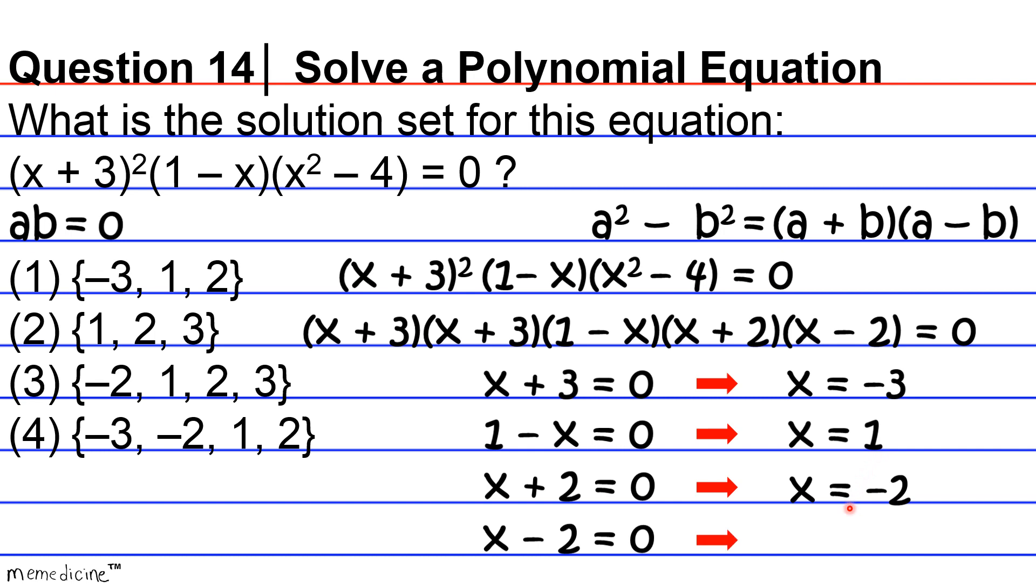We get that x is equivalent to negative two, and we get that x is equivalent to two. So this correlates with answer choice four. Therefore the correct answer is answer choice four, and our solution set is the set of x such that x is equivalent to negative three, x is equivalent to negative two, x is equivalent to one, and x is equivalent to two.